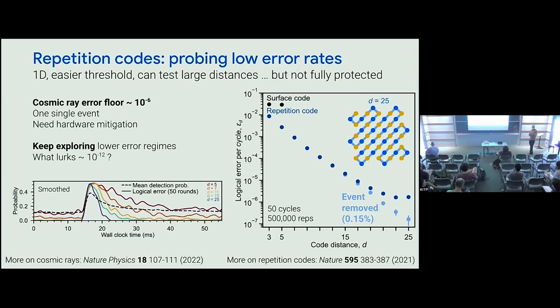Question about the randomization of initialization: was that just for fair benchmarking comparison, or would you use it if trying to use the qubit? In this case it's all about making a fair comparison. If you're making a quantum computer, just put them all in zero.